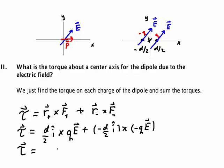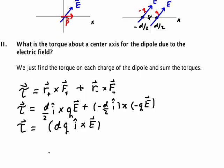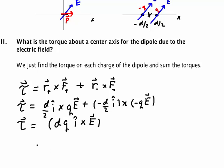You add those two together and you get d, and I can pull the q since it's a scalar, giving dq î × E. But in our particular problem, the P vector, the dipole moment, is dq î, so that means